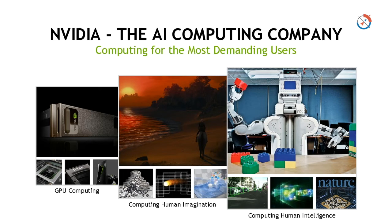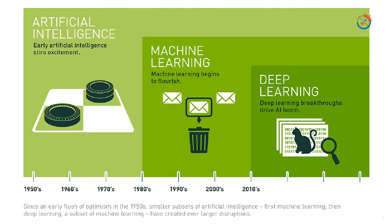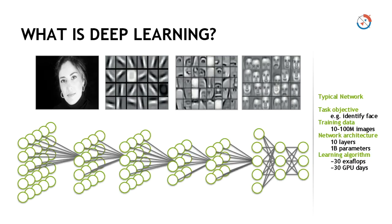NVIDIA, the company I work for — many of you know it started off as a GPU and graphics manufacturer — has today evolved into an AI computing company. Not only NVIDIA, but big names like Google, Facebook, Microsoft, and many others are all pumping a lot of R&D money into artificial intelligence and in particular deep learning as a technique.